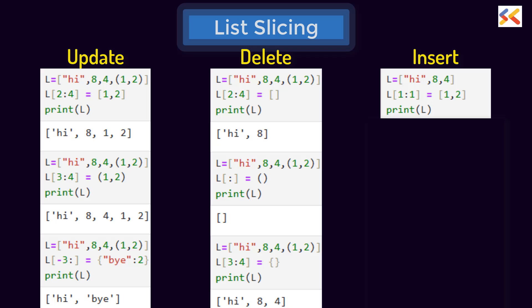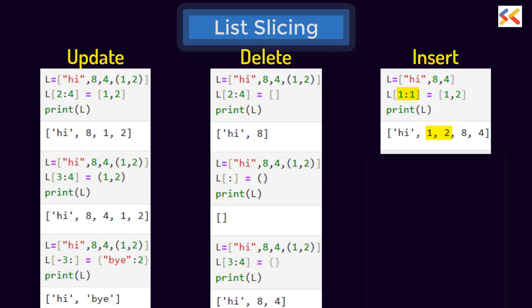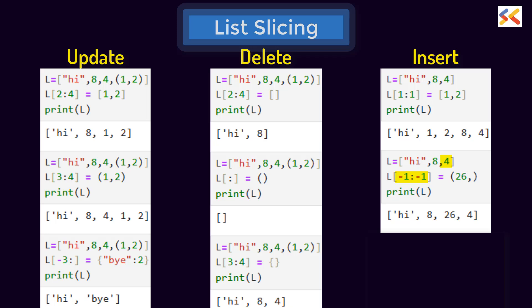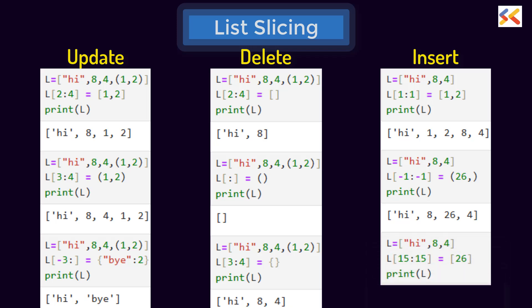Next, you can use slicing to insert elements in a list as well without disturbing other elements. Like if you want to insert an element at index 1, give the same index as start and end and when you run it, it will insert the element at that index. To insert at the end, using minus 1 might not give the result you expect — it actually shifts elements right before the last element. Instead, use any index beyond the last index, like 15, and it will insert the element at the end.